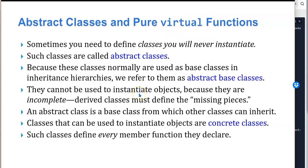Now we move on to what are called abstract and pure virtual functions. Sometimes you need to define a class you will never instantiate — this is called an abstract class. Because these classes are normally base classes, we refer to them as abstract base classes. They can't be used to instantiate objects because they are incomplete; derived classes must define the missing pieces. You can't say new abstract class. It's a base class from which others can inherit, and classes that can be used to instantiate objects are called concrete classes.